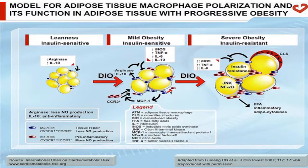The next step is from simple steatosis to steatohepatitis. From simple steatosis, there is a recruitment of macrophages leading to inflammation — a chronic inflammation which leads to fibrosis.